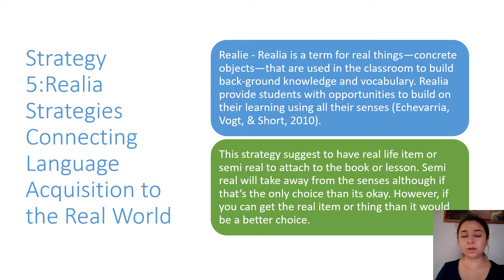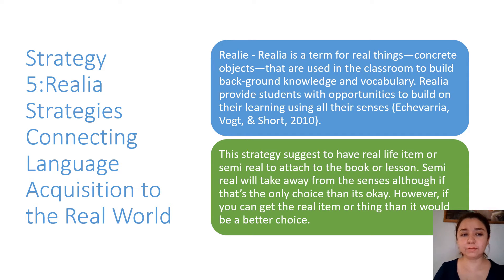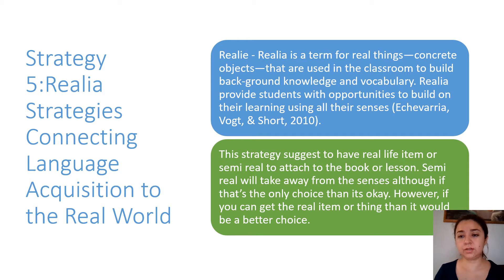My strategy was Strategy 5, which I was so happy about because I always wanted to learn about how to use items in our class. Strategy 5 is called realia — the sentence you're seeing right now describes it: realia is a term for real things, concrete objects that are used in the classroom to build background knowledge and vocabulary.